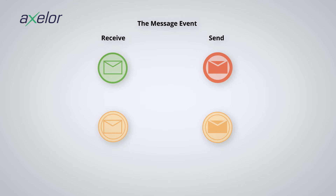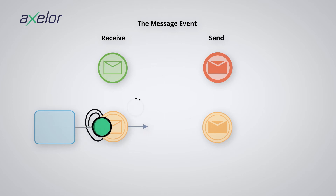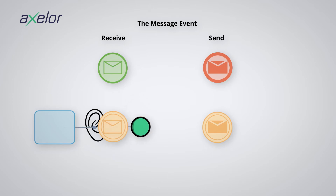For a sent message, there can only be one process able to receive it. Thus, the receiving messages are on standby, waiting for a message. In the case of a message event at the beginning of a process, the event is always active and triggers the creation of a token, and therefore an instance of the process as soon as a message is received. For intermediate reception events, as soon as they are activated, they start monitoring for a message, which on reception triggers the rest of the process.